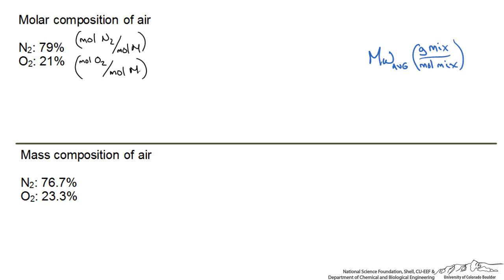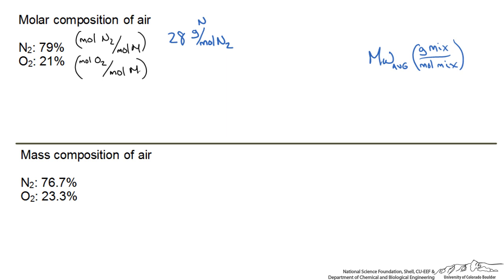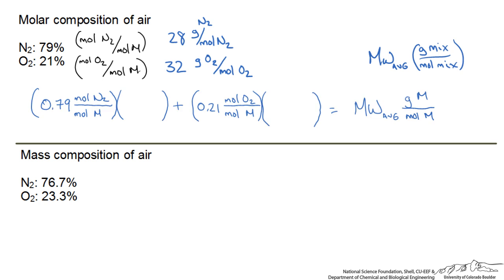We need to use the information we are given for the molar composition of air and come up with an equation that gives us units of grams of mixture per mole of mixture. We know the molecular weights of these two components — the molecular weight of nitrogen would be 28 grams per mole of nitrogen. I am using units so you can see how we are going to develop this equation. Let's assume that we multiply, and write it out with blank parentheses for the molecular weights.